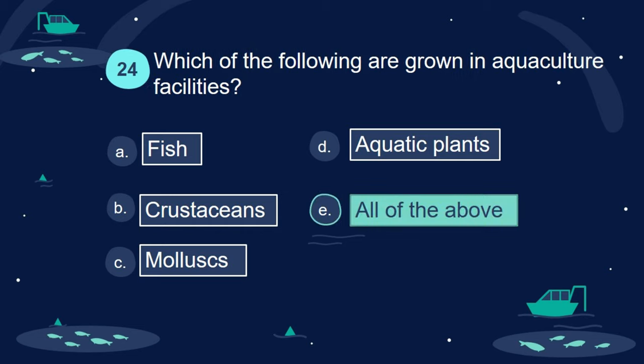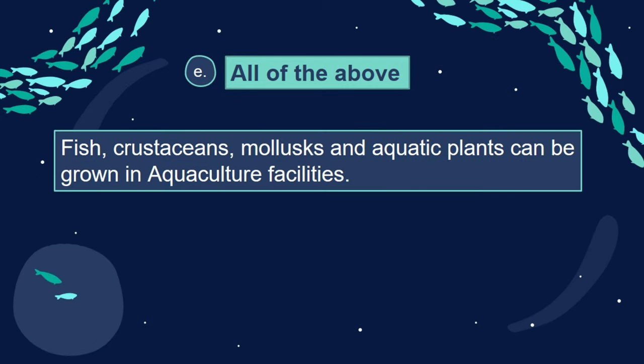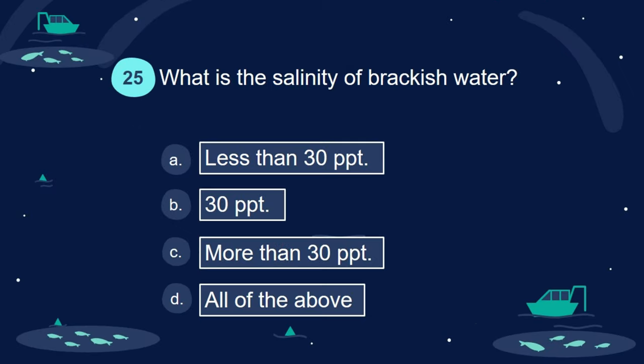Answer: All of the above. Fish, crustaceans, mollusks, and aquatic plants can all be grown in aquaculture facilities.